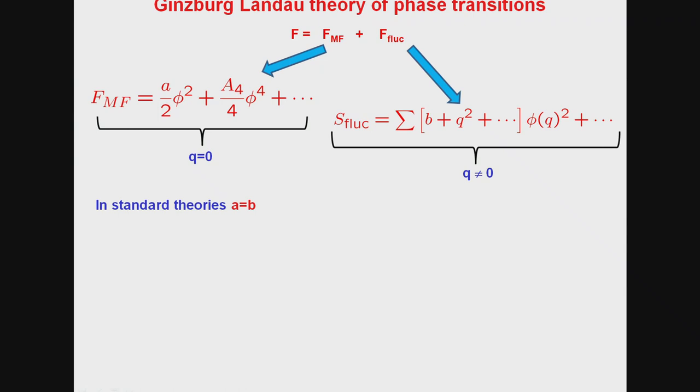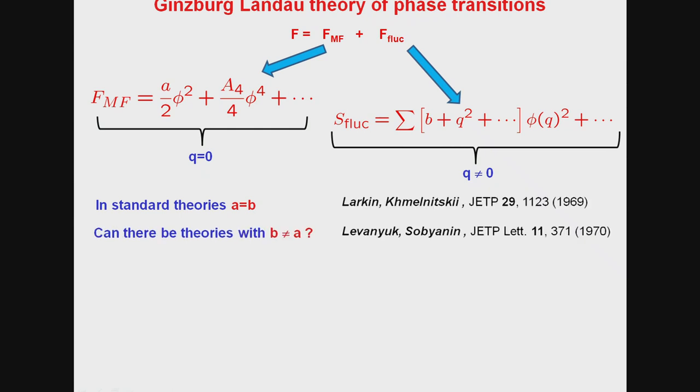So, it turns out that the argument can be understood purely within the scenario of Landau's theory of phase transition. So, we are used to thinking that the free energy can be written down in terms of a mean field part and a fluctuating part. So, exactly as in Premi's talk, it's actually very important in this case to separate out what is the exact Q equal to zero variable and the Q not equal to zero variables. So, these are the fluctuations. Now, you might think that here I have an A and a B over there, and it's a typo, and indeed, in standard theories, these two quantities are the same. But one can ask the question that do they need to be the same.